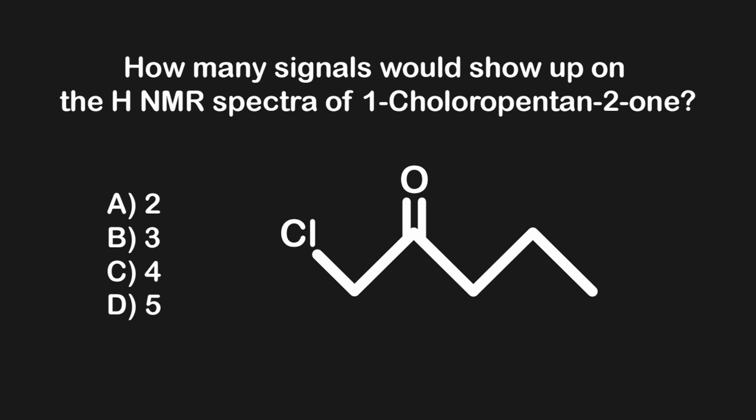Now that we've seen how to find the number of signals, let's look at two sample problems. This question asks: how many signals would show up on the HNMR spectra of 1-chloropentan-2-one? Since this molecule is linear, we only need to draw a vertical symmetry line. This molecule isn't mirrored across that line, therefore all of the hydrogens will be unique. All carbons excluding the carbonyl carbon will have hydrogens, so in total we will have four unique hydrogens and therefore four signals, making answer choice C correct.